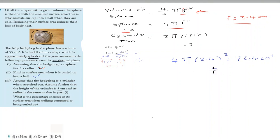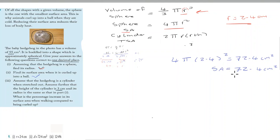So the surface area is equal to 72.4 centimeters squared. This represents how much of the animal's body is exposed to the environment or the cold when it is curled up in a ball.